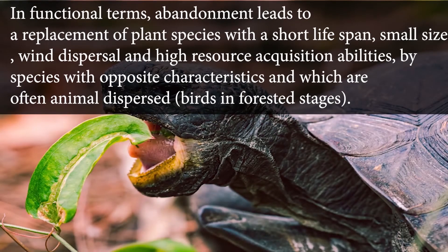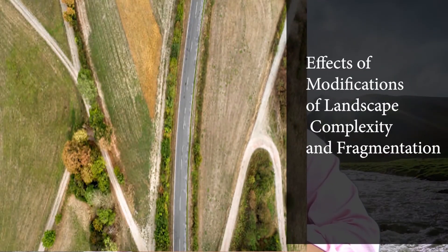The effect on biodiversity of abandonment of a previously cultivated area depends strongly on its initial state. In the case of crop fields like cereals, characterized by environments initially poor in species, species richness increases during the first few years following abandonment for practically all groups of organisms, including microorganisms. In functional terms, abandonment leads to a replacement of plant species with short lifespan, small size, wind dispersal, and high resource acquisition abilities by species with opposite characteristics that are often animal-dispersed, especially in forest states.